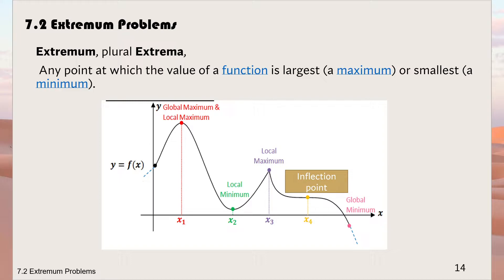Looking at this diagram, we have two maximums: one is called global maximum and another is local maximum. For the global maximum, if you compare the two, x1 is the highest, so it is called global maximum. For the local maximum, x3 is the maximum within the interval between x2 and x4, so it is called local maximum.